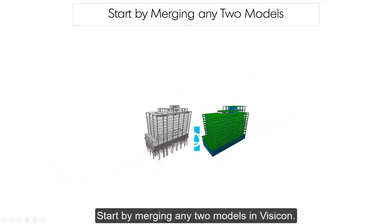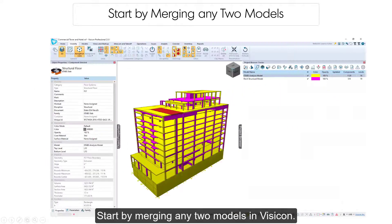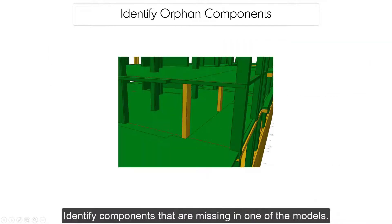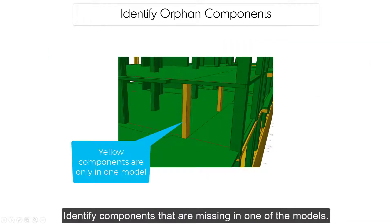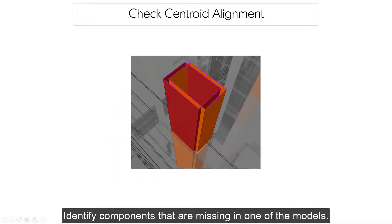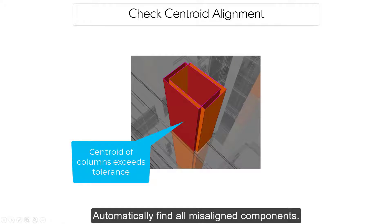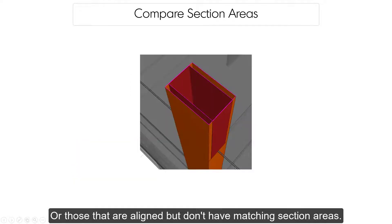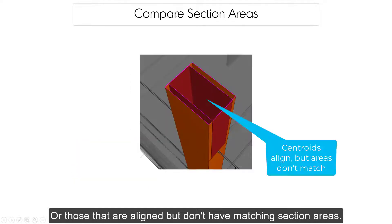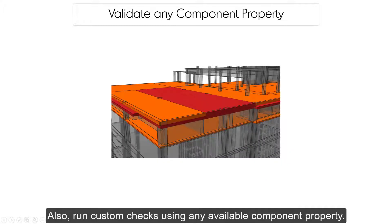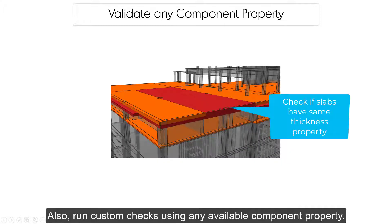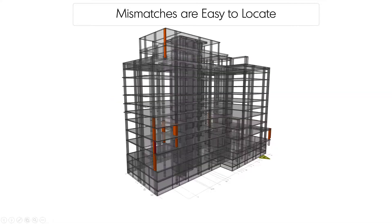Start by merging any two models in Visicon. Identify components that are missing in one of the models. Automatically find all misaligned components, or those that are aligned but don't have matching section areas. Also run custom checks using any available component property.